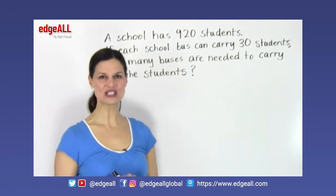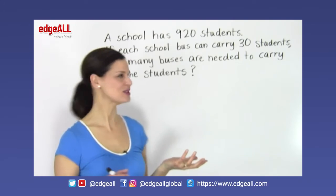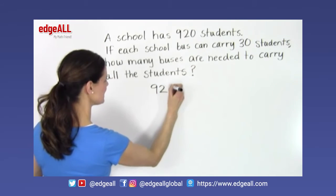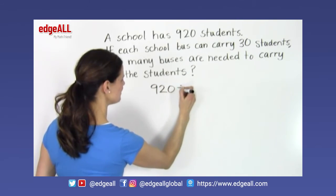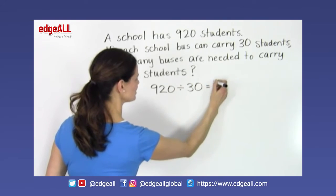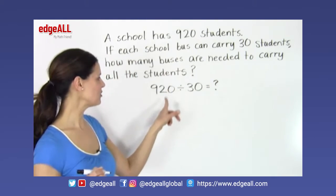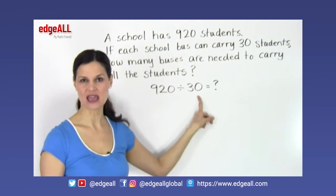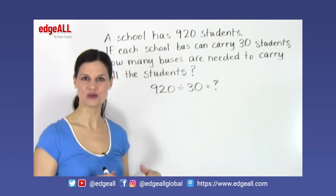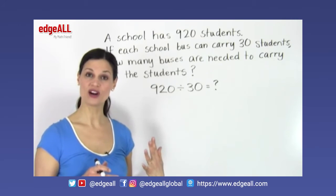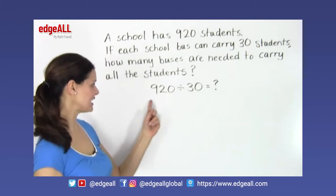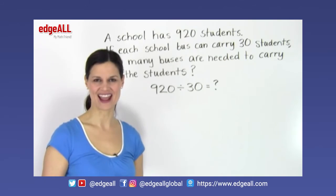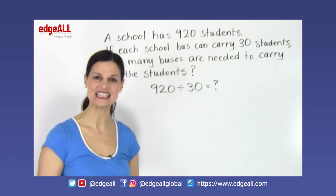So when we first look at this problem, we would think that the solution to it would be 920 divided by 30. So we would think 920 divided by 30 would be the answer to our problem, which is true. However, since 920 is not divisible by 30, we are going to end up with a difficult problem to work out. And also we're going to end up with a decimal in our answer since 920 is not divisible by 30.